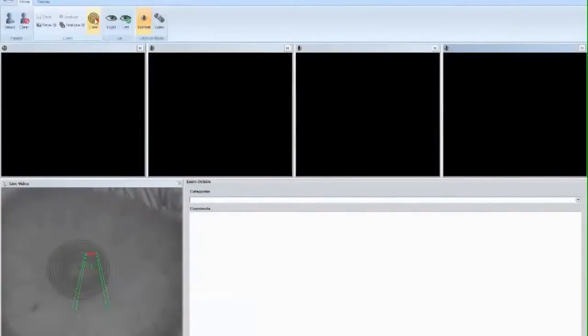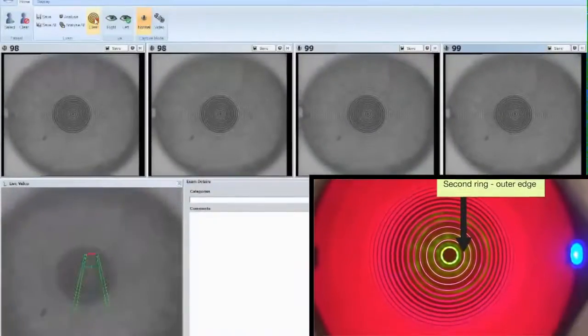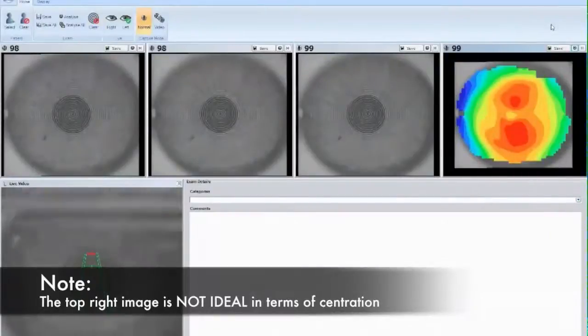We need to ask the patient to look at the outer edge of the second ring. In this example, we are getting close to centration, but we are still not there.